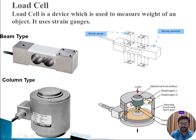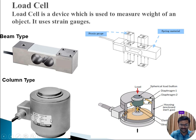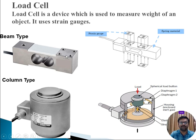In the column type of load cell, there is a spherical load button over which we apply the load. The force is applied along the horizontal axis over this spherical bottom, and the hanging portion is where the force to be measured is placed.